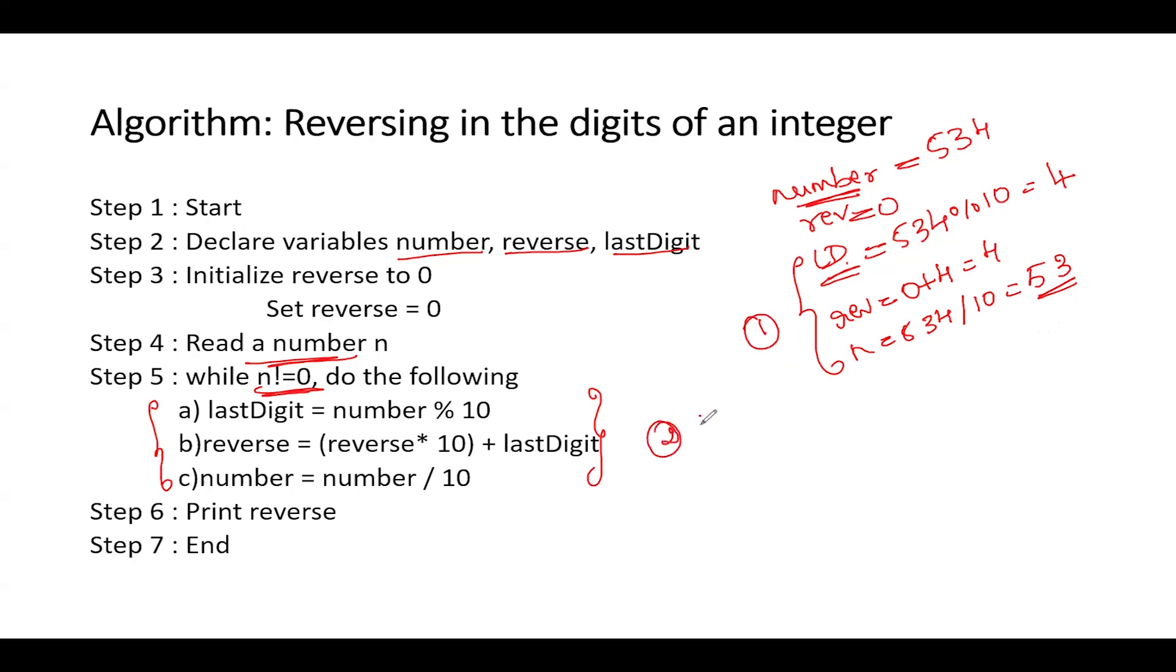In the second iteration, I will do once again, last digit is equal to 53 mod 10. Remember, now in this phase, n value must change to 53. Hence, 53 mod 10. This will give me the value 3 because 10 divides 53, 5 times and the remainder is 3. And then I will say reverse is equal to, reverse has the value 4, so 4 into 10 plus the last digit, which is nothing but 3. Hence, the value will be 43. And then I will say n is equal to 53 divided by 10, and it will give me the value 5. This is my second iteration.